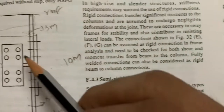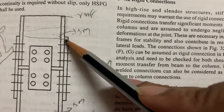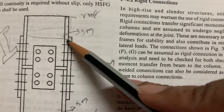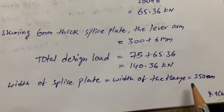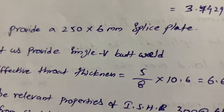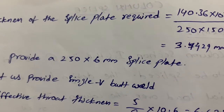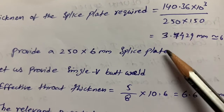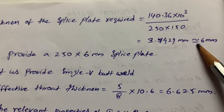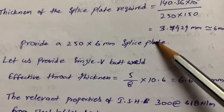The width of the splice plate equals the flange width of the I-section, which is 250 mm — available from the code book. The required thickness of the splice plate is calculated as: 140.36 × 10⁴ / (250 × 150), giving approximately 6 mm. So we provide a 250 × 6 mm splice plate.